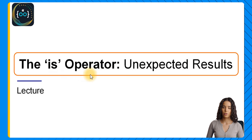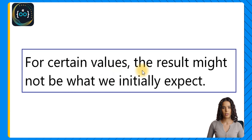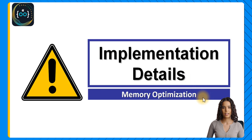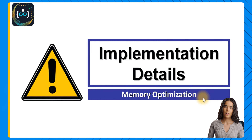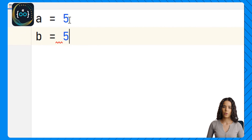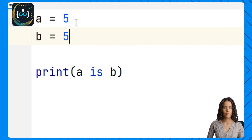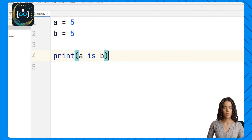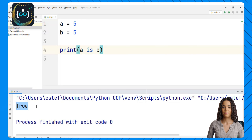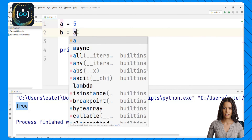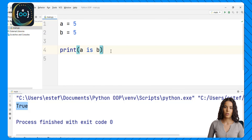When you work with the 'is' operator in Python, there might be some unexpected results. For certain values, the result might not be what we initially expect, and these variations come from implementation details of Python used to optimize memory usage. This can vary depending on your programming environment and Python version. For example, if we assign the value 5 to two variables a and b and print the result of 'a is b', we run the code and see that this is actually true — these two variables reference the same object in memory, even though we didn't do this explicitly.